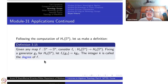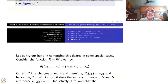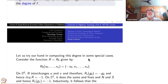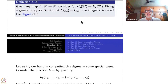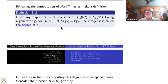This is defined whenever you have a map from S^N to S^N. The degree could be any integer in general. Let us try computing this degree in some very special cases. Obviously if you take F to be the identity map, then F* will also be the identity map, so G_N will go to G_N and K will be 1. So the identity map has degree 1.